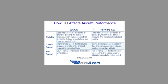How does our CG affect our aircraft performance? Let's look at it in the relationship of stability. An aft CG actually makes our aircraft less stable. This is because the center of gravity is closer to the center of pressure, which causes longitudinal instability and makes stall and spin recovery more difficult. Versus a forward CG means we're more stable because the center of gravity is further from the center of pressure, thus increasing that longitudinal stability and increasing leverage.